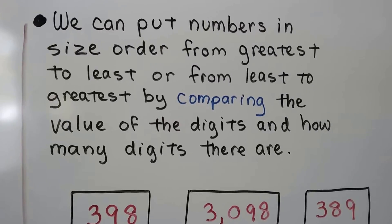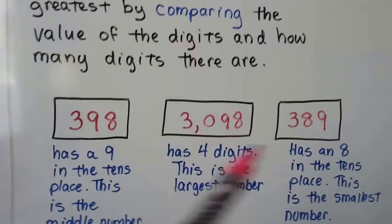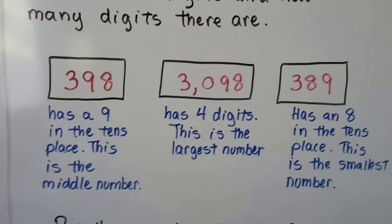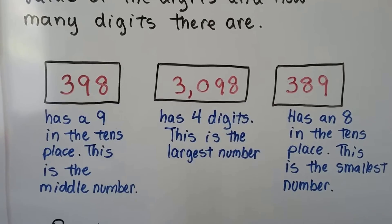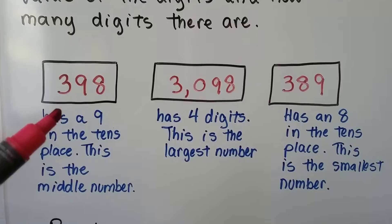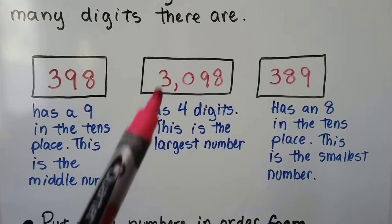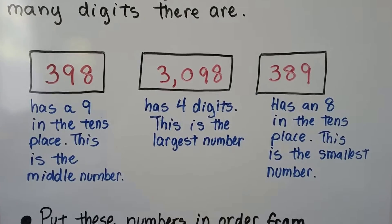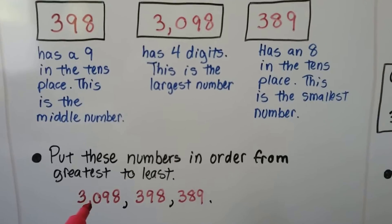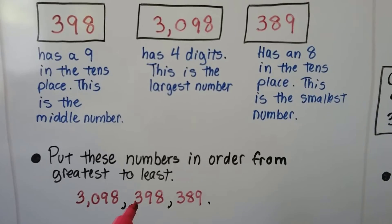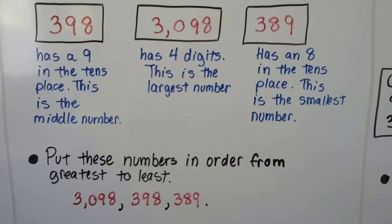We can put numbers in size order from greatest to least or from least to greatest by comparing the value of the digits and how many digits there are. Here we have three numbers. To compare them, we look: there's a 3 in the hundreds place, a 9 in the tens place, and an 8 in the ones place. This will be the middle number because another has an 8 in the tens place, making it the smallest. The one with four digits is the largest. From greatest to least: 3098, then 398, then 389.